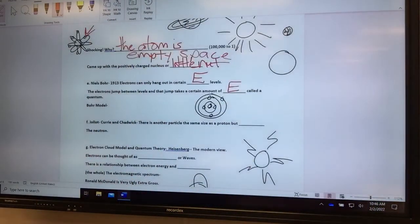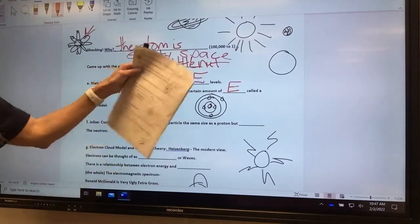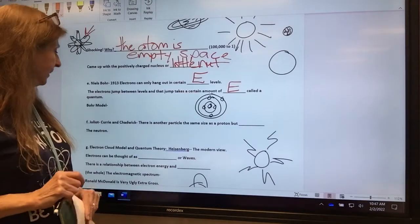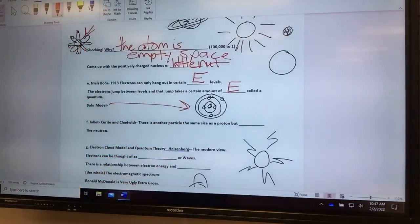The electrons have to hop between energy levels, and those are quantum leaps. Have you heard of a quantum leap before? So the next idea that came, this is the Bohr model, and we're going to draw Bohr models. That's what it looks like.